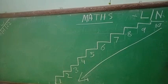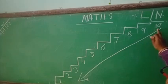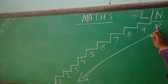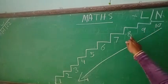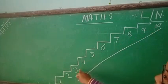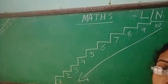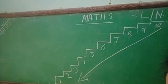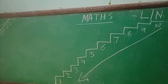The counting which is going here. So: 10, 9, 8, 7, 6, 5, 4, 3, 2, 1. That is the backward counting.